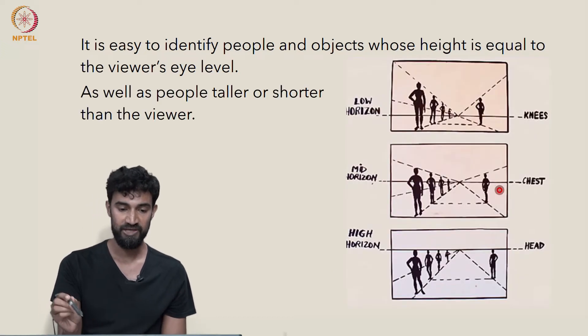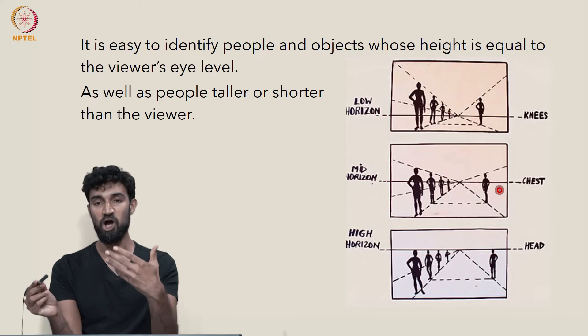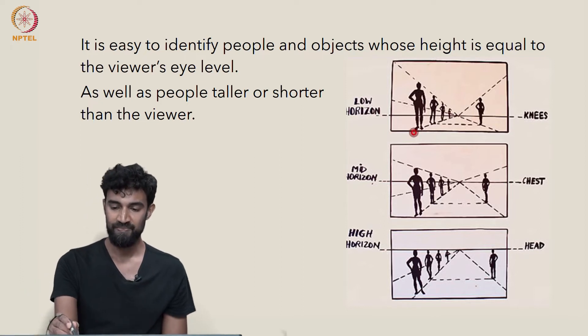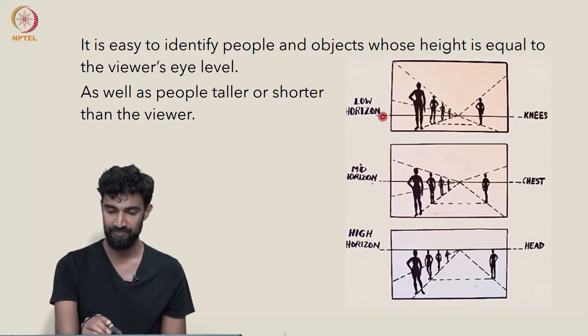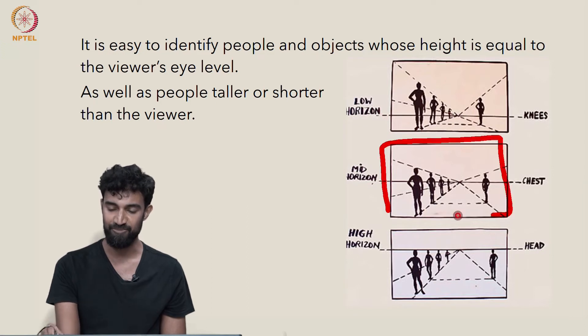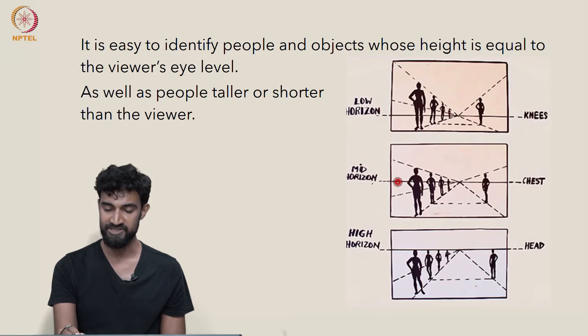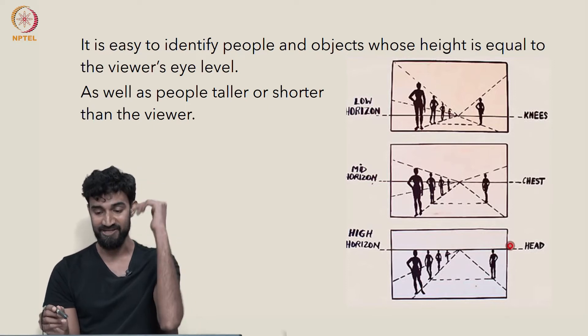Similarly, you can see whether people are taller or shorter than the viewer. All these people have the same height as one another, and the viewer's eye level is at their knee level. All of these people have the same height as one another, but the viewer's eye level here is at their chest level. And finally, here's the image we just saw, where the viewer's eye level is at the exact top of their heads.